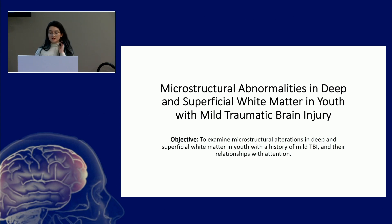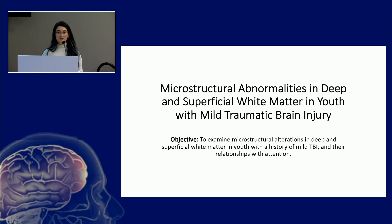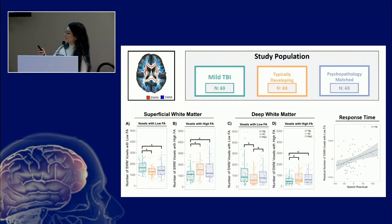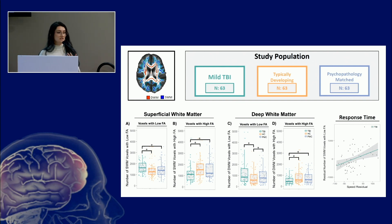Our study sought to understand differences in the microstructural abnormalities that we see in different classes of white matter. As we've heard from many presenters today, white matter is at particular risk for damage in mild traumatic brain injury, so we decided to split that white matter up. On the top left here, you can see essentially how we split it up — into deep, long-range fibers and superficial short-range fibers.